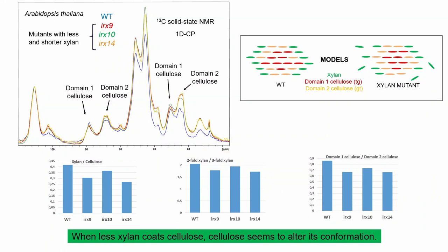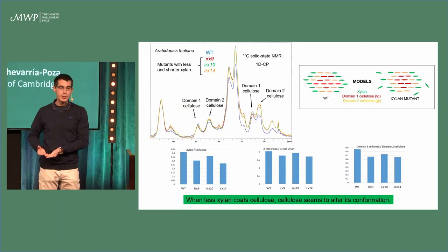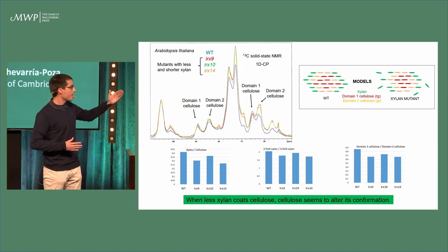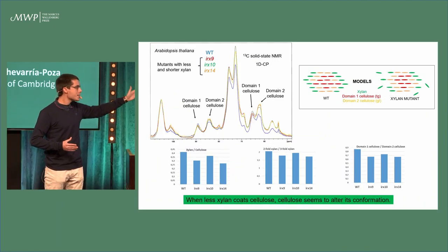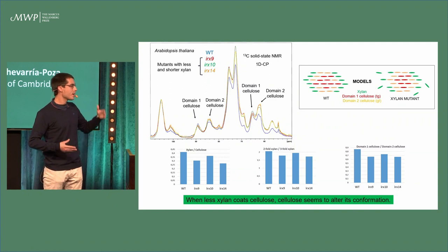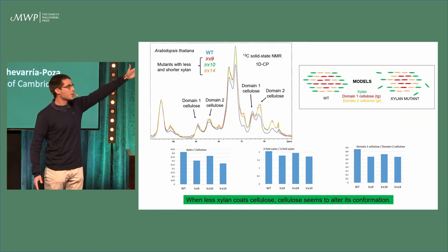We also found that these mutants with short xylan seem to have a change in the cellulose conformation — predominantly they have most of the conformation found mainly on the surface. This allows us to propose a new model, as you can see in the top corner: when there is less xylan coating cellulose, cellulose appears to be altering its conformation, as we can see in the model on the right.